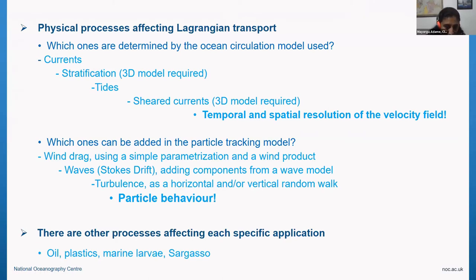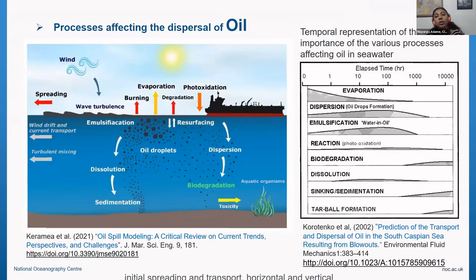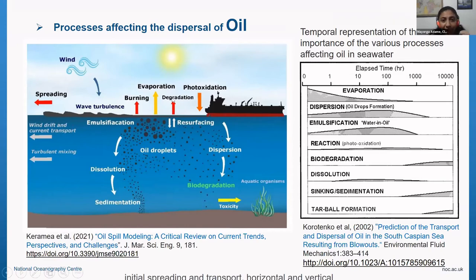This type of process will depend on whether you're looking at oil, plastics, marine larvae, or other types of particles. For oil, it turns out to be a very complicated thing to model because there are many other processes affecting it — for example, it can evaporate, it can degrade, it can have photo-oxidation, and of course dispersion. Some of these are normal physical processes that affect everything, but some are specific to oil, like emulsification, biodegradation, or even ingestion by biota.